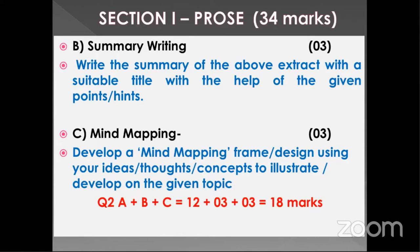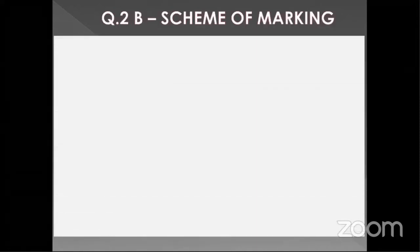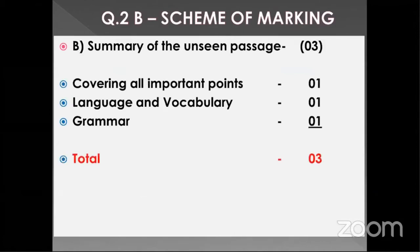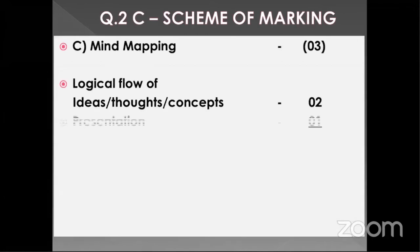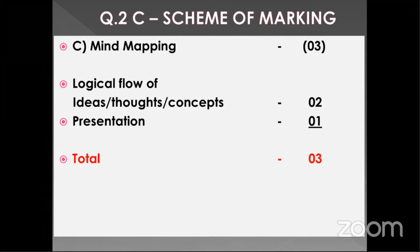Question 2A, B, C: 12 plus 3 plus 3 is 18 marks. The marking scheme for summary is three marks — if you are covering all the points, language is proper, vocabulary is good, and grammar is good, you get full three marks. For mind mapping, there are two things assessed: whether your flow of ideas and concepts is logical for two marks, and whether your presentation is done properly for one mark. This is the end of section one.